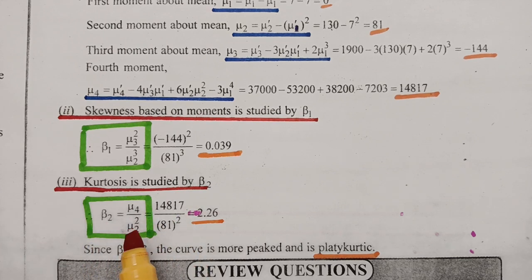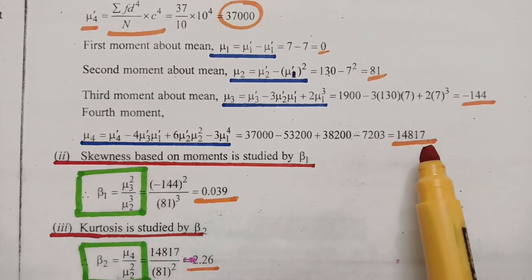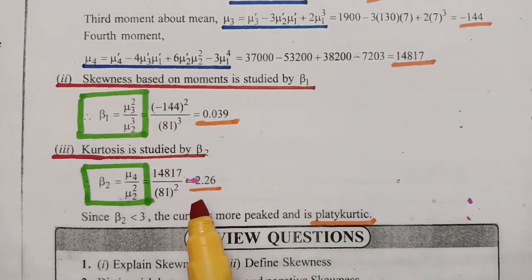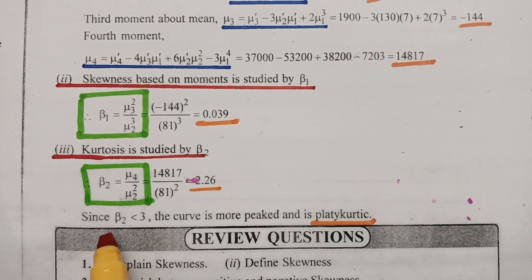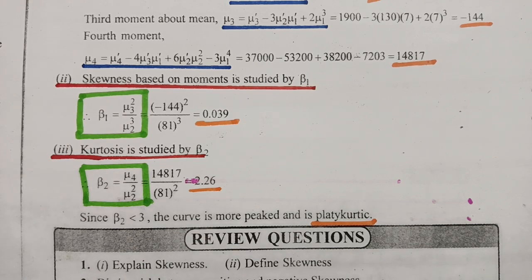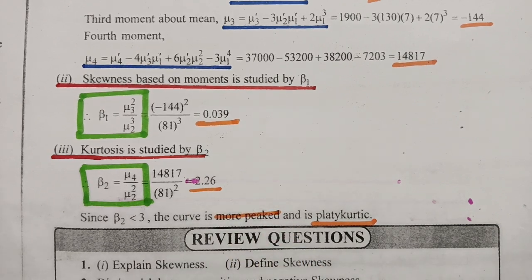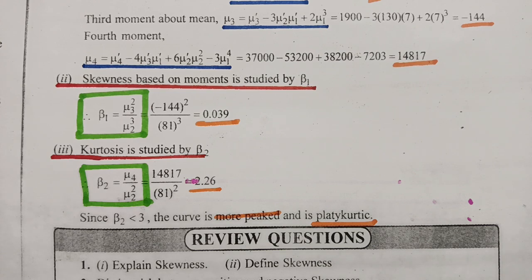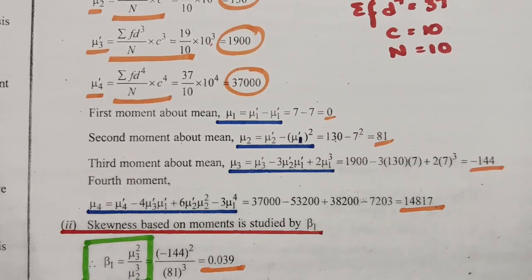The kurtosis β₂ = μ₄ / μ₂² and after substituting we get 2.26. Since this value is less than 3, the curve is very flat and therefore it is called platykurtic — not more peaked but more flat — as you have studied in the earlier video about kurtosis and skewness.